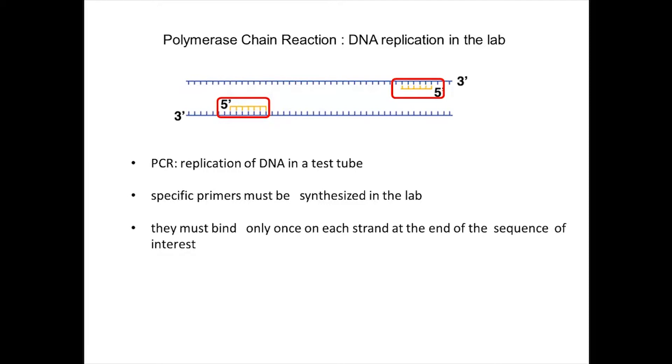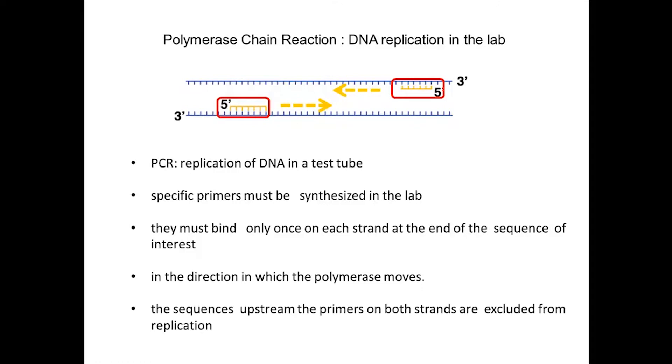Consequently, they must be long enough to bind only once on each strand at the end of the sequence of interest in the direction in which the polymerase moves. In this way, the sequences upstream of the primers are excluded from replication.